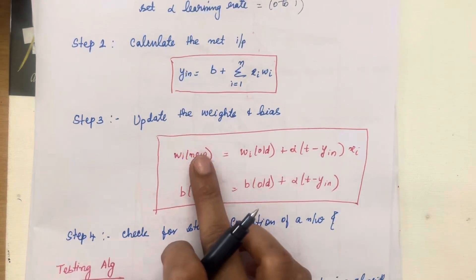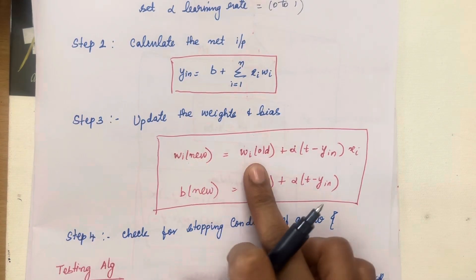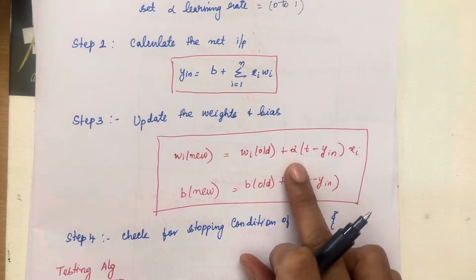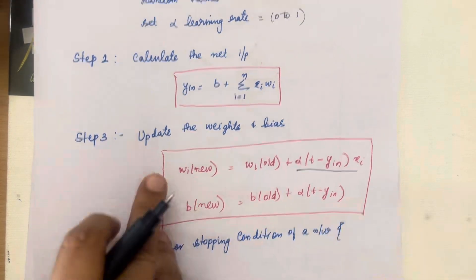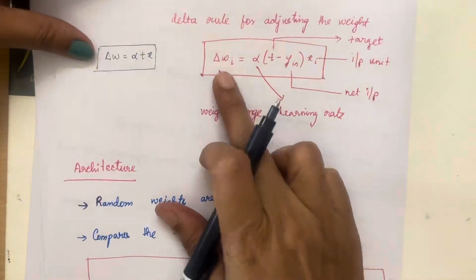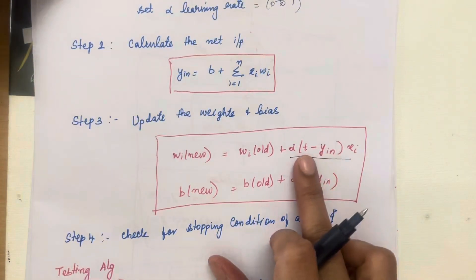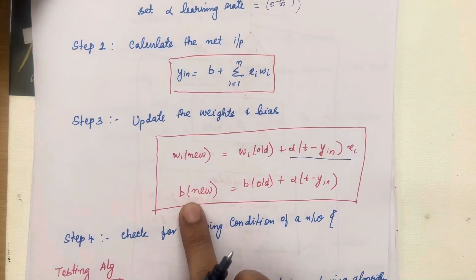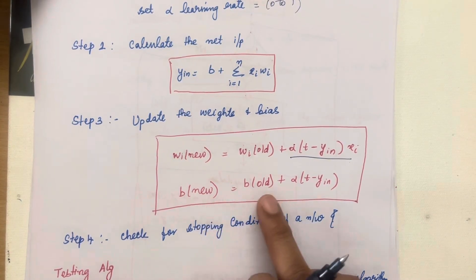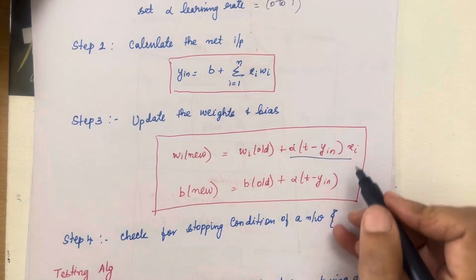After calculating y_input, update the weights. New weights = old weights + delta, where delta = alpha × (t − y_input) × xi — this is the delta rule. Likewise, the new bias = old bias + alpha × (t − y_input), where xi equals 1 for the bias term.